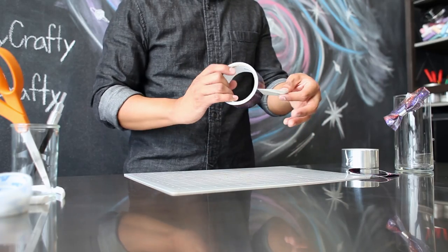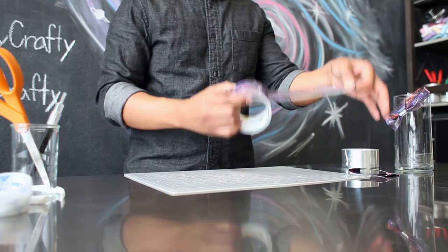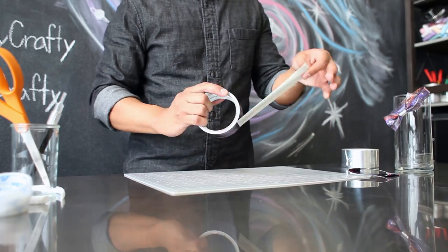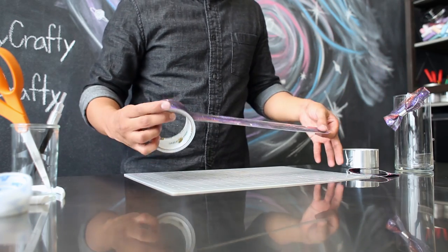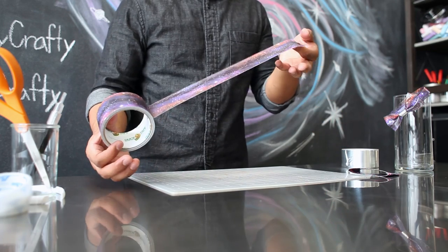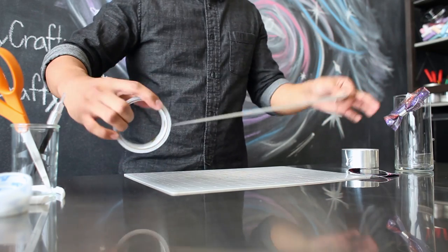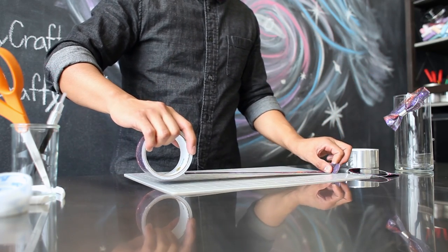Next take your galaxy duct tape and you're going to create the collar of your bowtie. Depending on the thickness of your neck you might have to use anywhere between 10 to 20 inches of tape. Pull this apart and set it on your cutting mat.